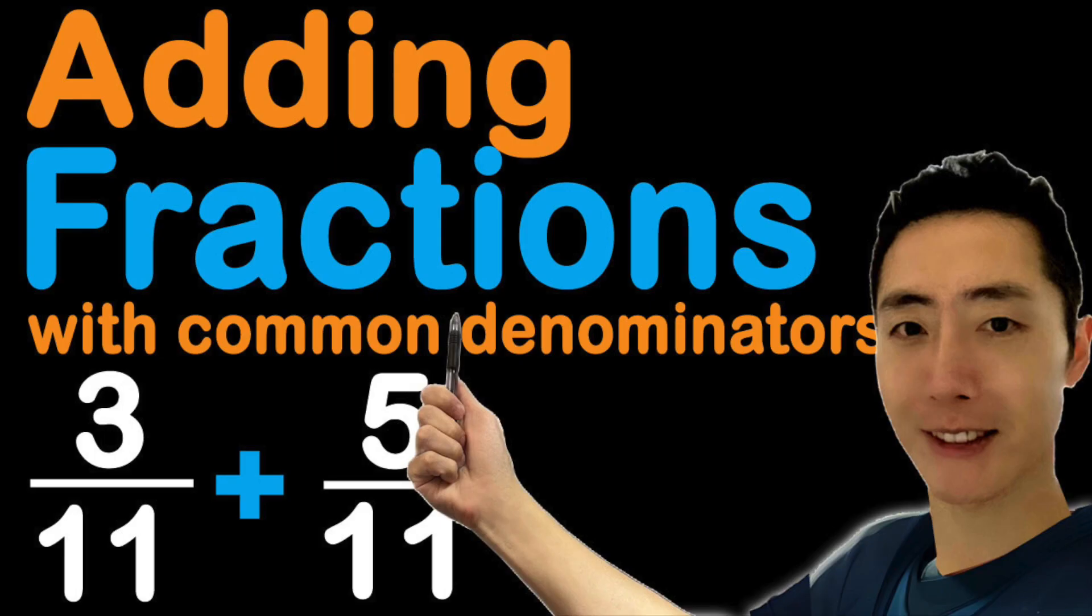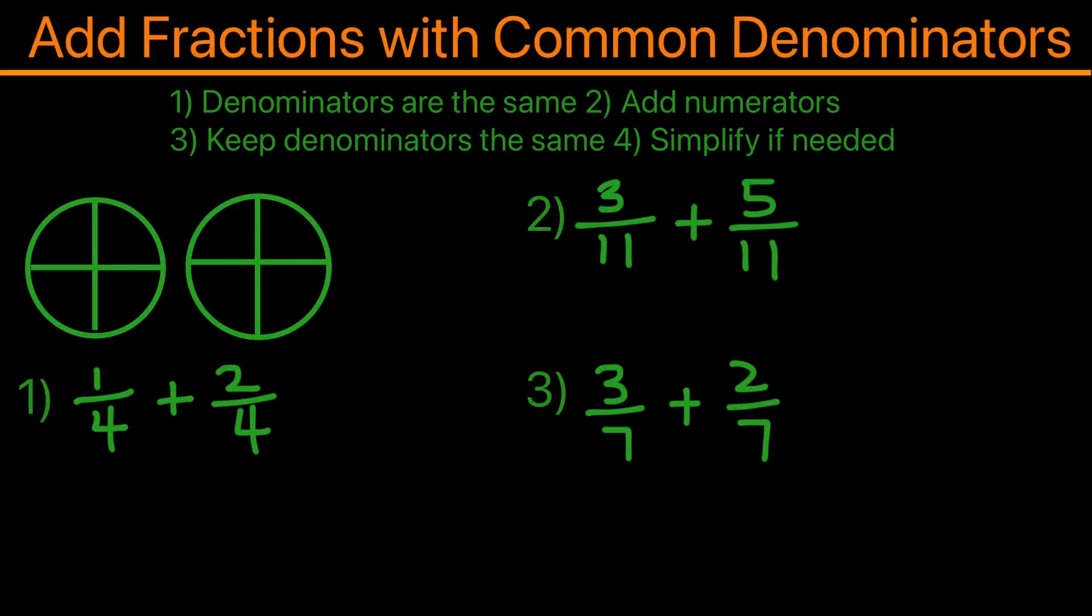In this video, I'll be going over adding fractions with common denominators. The four steps are as follows: First, we need to make sure the denominators are the same. If they are, secondly we will add the numerators together. Third, we would keep the denominator the same in the answer. And lastly, we would simplify if needed.